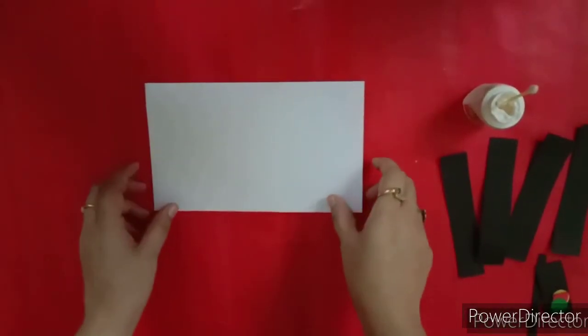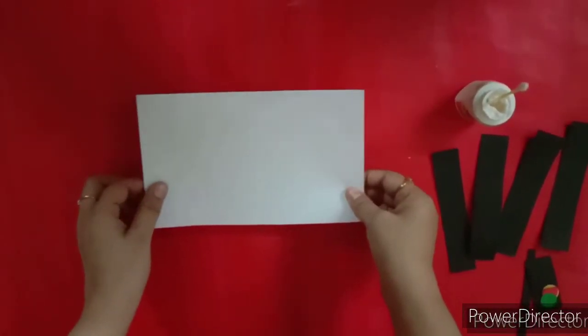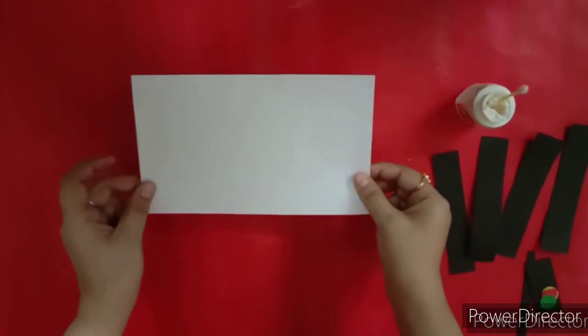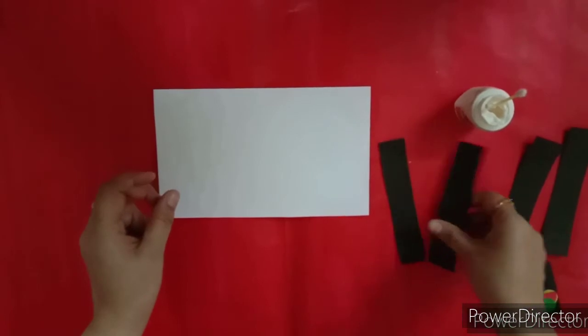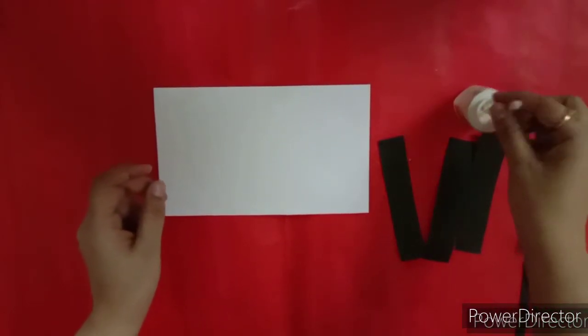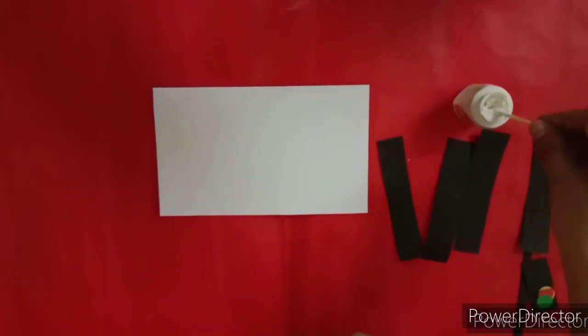So, let's do one activity and make one zebra crossing and traffic signal. For that, we need white paper, some black strips and glue. So, let's start.